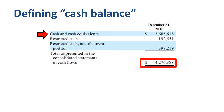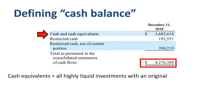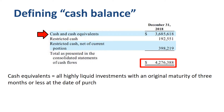What are the cash equivalents in the line cash and cash equivalents? Cash equivalents are all highly liquid investments with an original maturity of three months or less at the date of purchase — for Tesla, mostly money market funds. Cash and cash equivalents were $3.7 billion at year-end 2018, or 86% of the total balance.